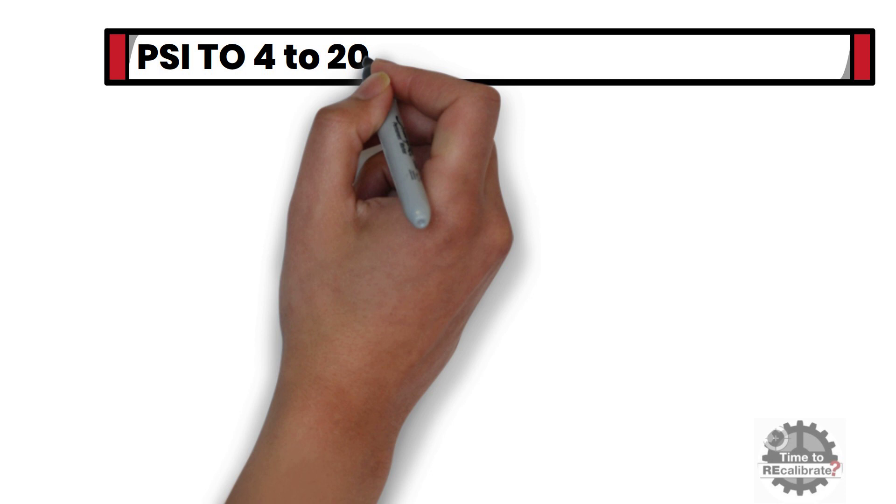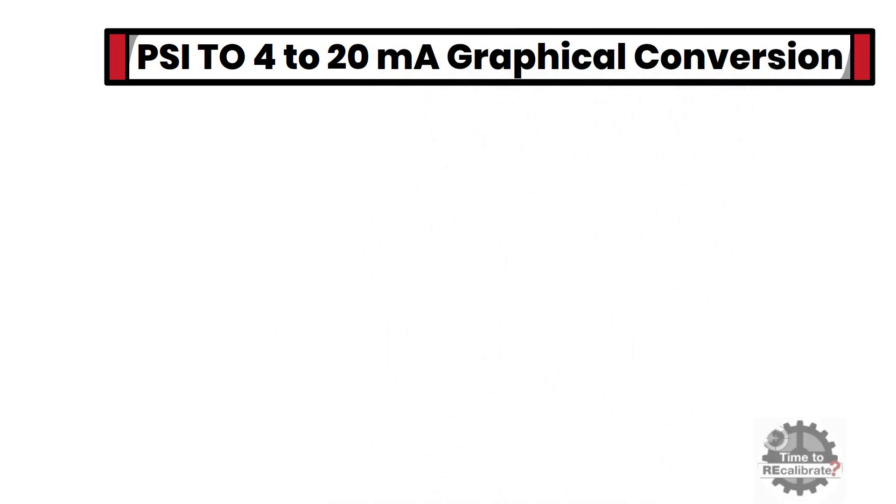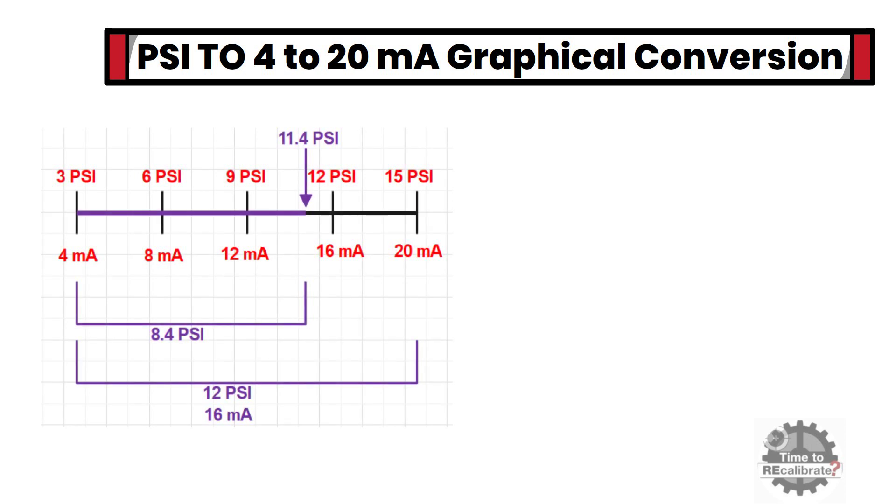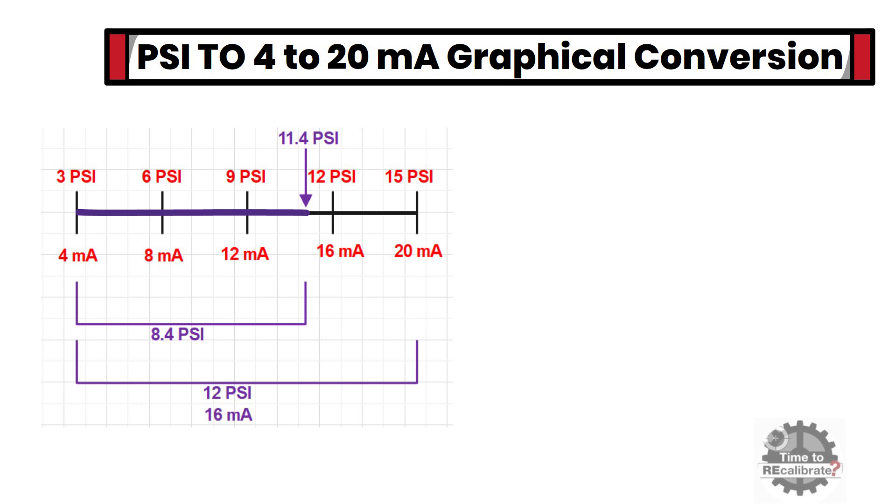Let's take one more example to convert PSI signal into milliamp signal. As you can see, in this example, I am going to show how to convert 11.4 pounds per square inch signal into milliamp signal by using graphical calculation method. As you can see from this graph, the thick line is 8.4 pounds per square inch long. It is the distance between 11.4 pounds per square inch and 3 pounds per square inch over the total length of 12 pounds per square inch.